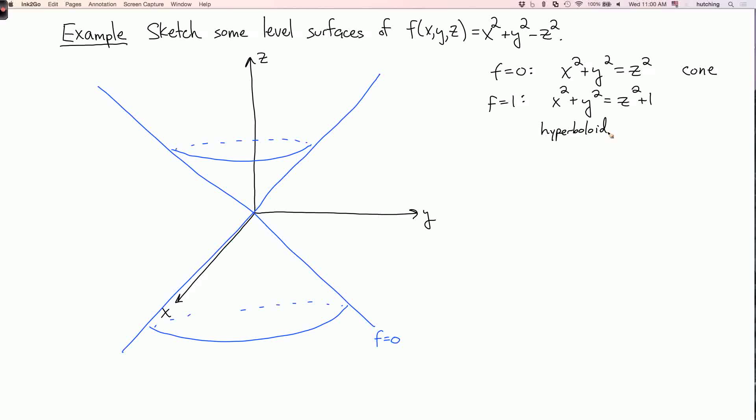Is it one sheet or two sheets? Well, you look at the equation, if z equals zero, then we do have solutions because the right-hand side is positive. So for any z, there will be solutions x and y, so this is a hyperboloid of one sheet.